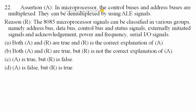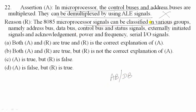Twenty-second question: assertion — in the microprocessor, the control bus and address bus are multiplexed and can be demultiplexed using address latch enable. This is false. In 8086/8085, address latch enable is used to demultiplex the address bus and data bus (not control bus). The reason states 8085 signals are classified into address bus, data bus, control bus, status signals, externally initiated signals, power/frequency signals, and serial I/O signals — this is true. Option D: assertion is false but reason is true.